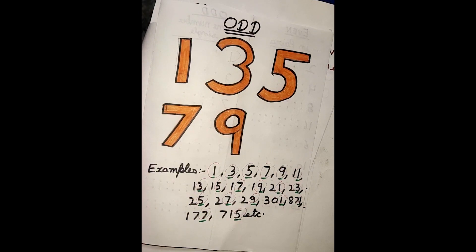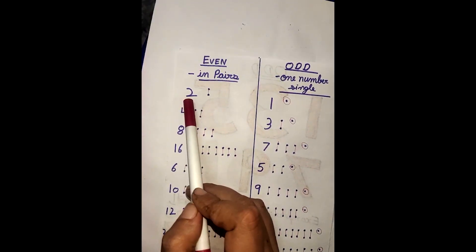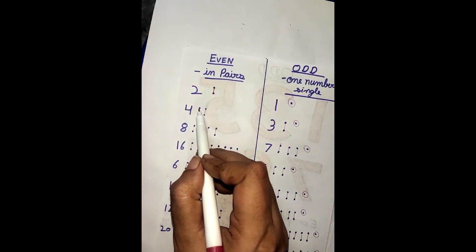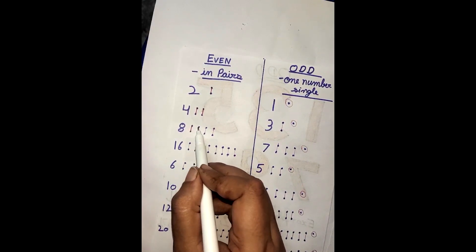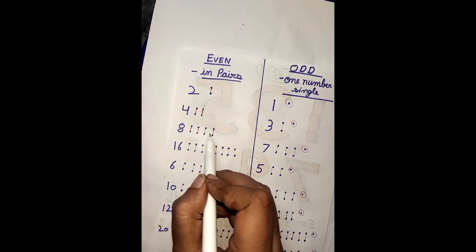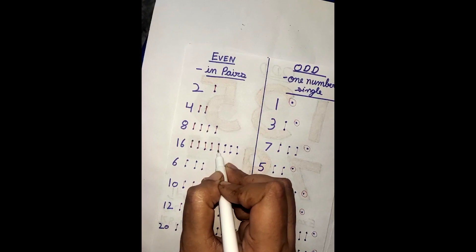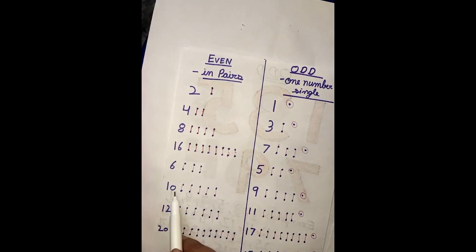Now let's do some exercises. As I said, even numbers have partners. So if we say 2, there are 2 dots — they are partners. If I say 4, we have 2 pairs. If I say 8, we have 4 pairs. 16 has 8 pairs, 6 has 3 pairs, 10 has 5 pairs, 12 has 6 pairs, and 20 has 10 pairs. So even numbers are always in pairs.